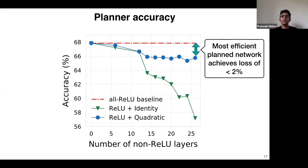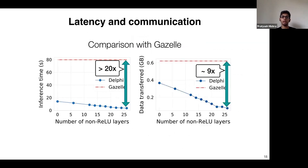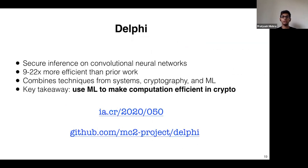In terms of planner accuracy, the most efficient network output by our planner achieves an accuracy loss of less than 2%. This is not because the activations are redundant — replacing them with identity functions causes accuracy to drop significantly, as shown in the graph. Our protocol takes advantage of this to achieve inference that is 20x more latency-efficient compared to Gazelle and reduces bandwidth by 9x. To summarize, Delphi constructs secure inference for convolutional neural networks that is much more efficient than prior work, combining techniques from systems, cryptography, and ML.